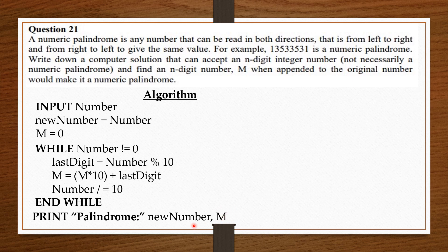Now the question is: why are we printing new_number and not the original number itself? This is because by the end of the while loop, the original number would be zero. That is why we saved a copy of it in the new_number variable.